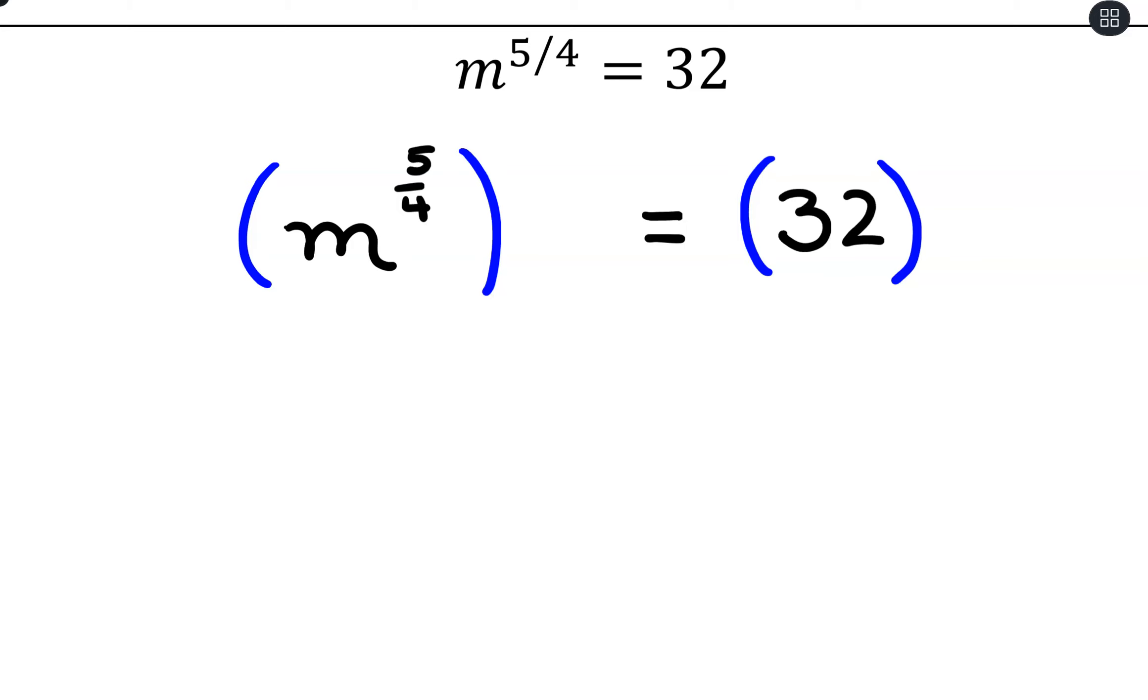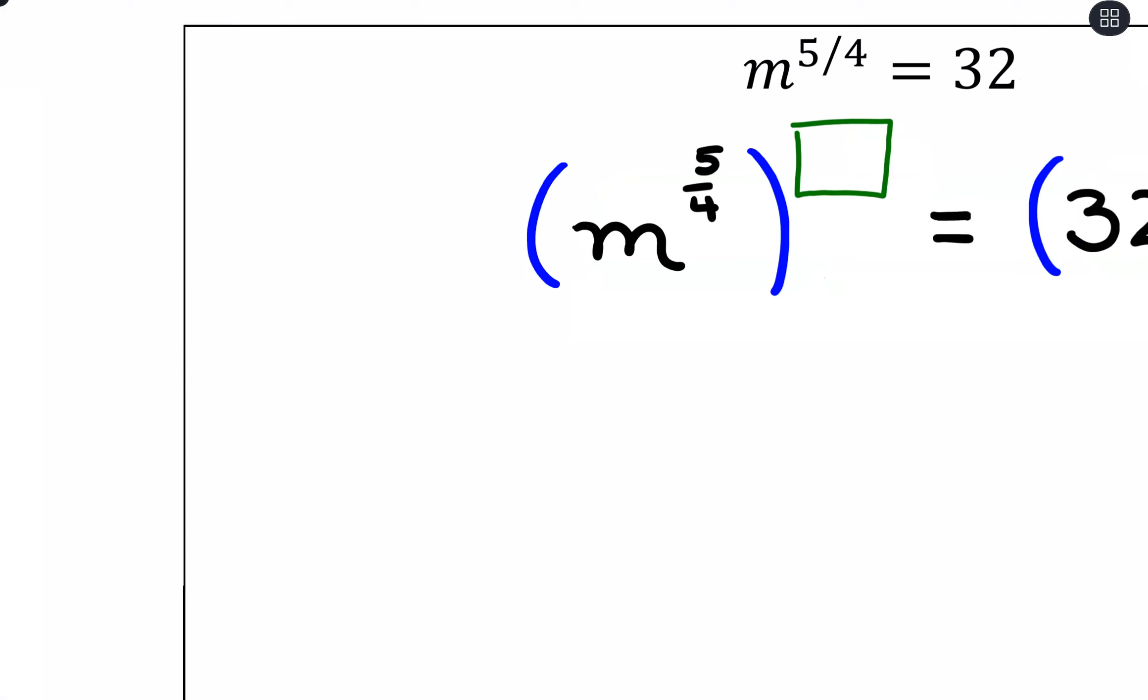Now, what we're going to do is we're going to raise both sides to an exponent. And that exponent is going to depend on that rational exponent that we're starting with. So if I have 5 fourths, what I'm thinking of is I want to multiply with a value such that I just get a positive 1 out. I want to end up with an exponent of positive 1 because that makes things a lot simpler. And to do that, what we need is to multiply by the reciprocal. We want to flip the fraction so that it all cancels out. That would be 20 divided by 20, which is equal to 1, to do exactly what we want.